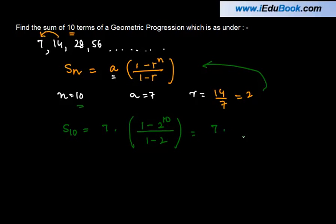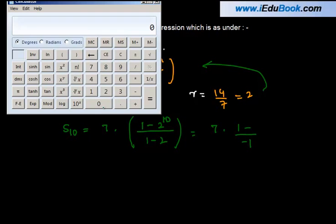You get 7 times 1 minus 2 gives you minus 1, so 1 minus 2 raised to the power 10. Now, how much is 2 raised to the power 10? Let us use the calculator to find out this value. So, 2 raised to the power 10 is equal to 1024.